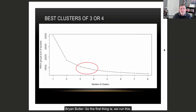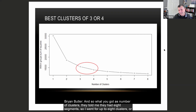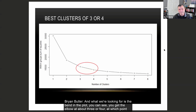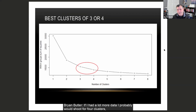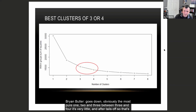The first thing we did was run the elbow plot — the famous Within Sum of Squares Residuals plot used for clustering. The client's consulting company claimed eight segments, so I went up to eight clusters. We're looking for the bend in the plot. You can see the elbow at about three or four, at which point it all flattens out. With a lot more data I'd probably shoot for four clusters, but given only 900 respondents, three would probably do the job.